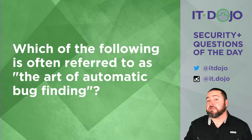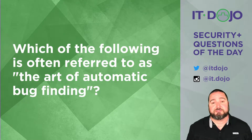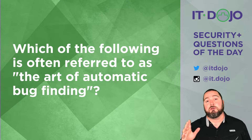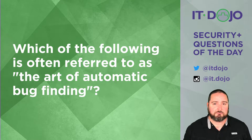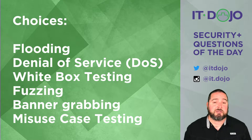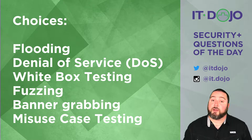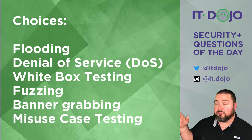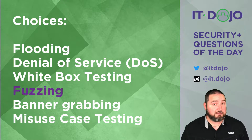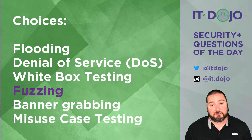My first question to you today is: which of the following is oftentimes referred to as the art of automatic bug finding? Go ahead and give those answer choices some contemplation. When you're ready, click play again — we can break it down. The right answer choice here, getting straight to it, is fuzzing. That is the art of automatic bug finding.